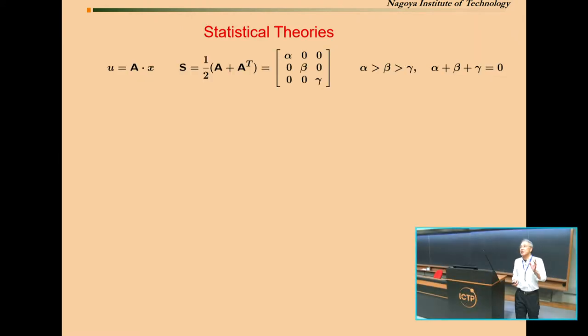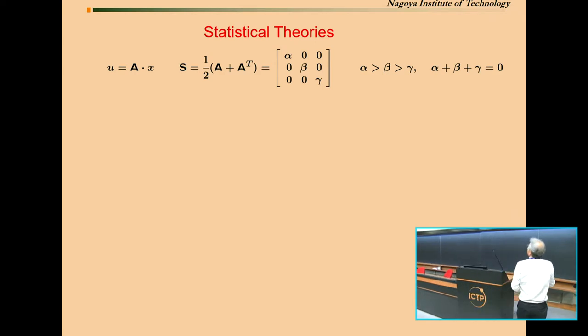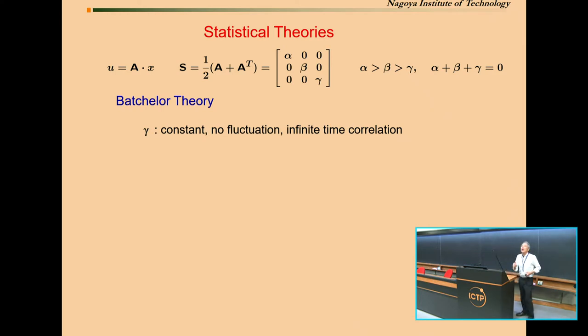Now I explain some representative statistical theory for passive scalar in this range. The key player is the rate of strain tensor. As I told you, we are talking about the scale much smaller than Kolmogorov scale. Therefore, velocity field is so smooth. Therefore, we may assume that velocity gradient is almost uniform over some range of scale. And then, we consider the rate of strain tensor, and we take some local coordinates in which the eigenvector is parallel to the local coordinates. The eigenvector is ordered in this way. The gamma is most negative. The alpha is most positive, the largest one.